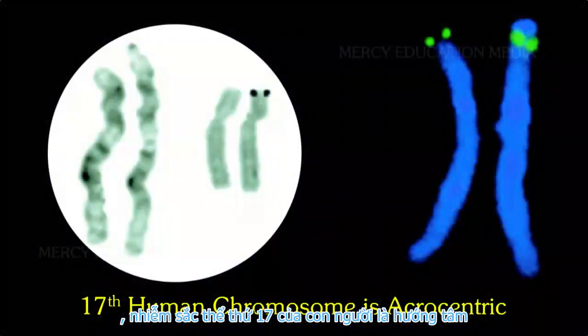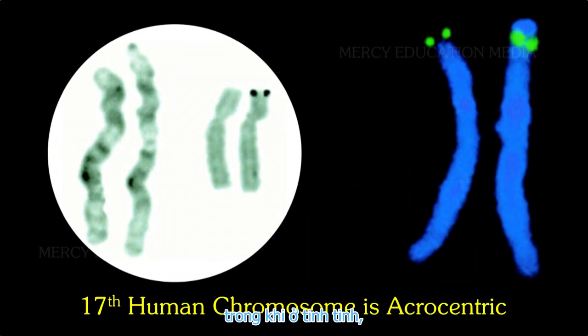The 17th human chromosome is acrocentric, while in chimpanzee, the corresponding chromosome is metacentric.